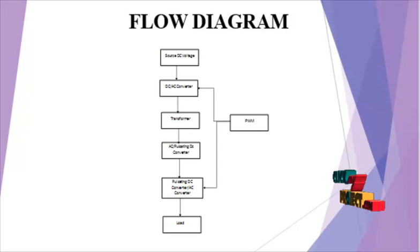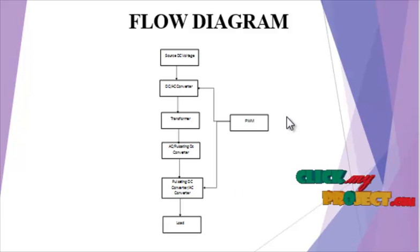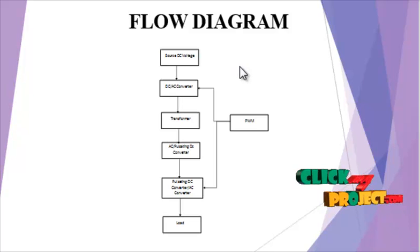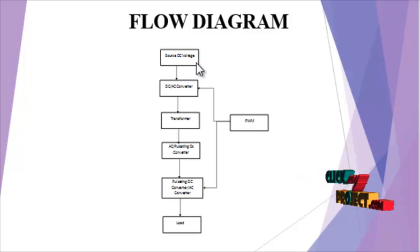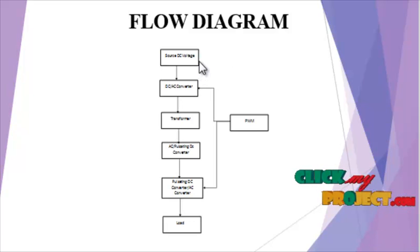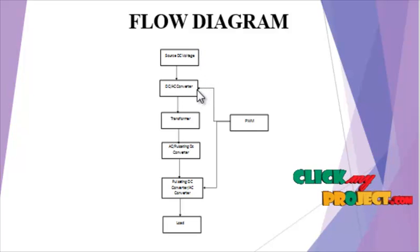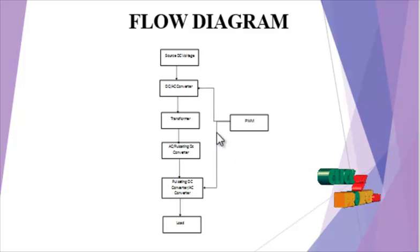Now we are going to discuss our product Flow Diagram. The input is a DC Voltage source. We are giving a DC input of 100 Volts, and this DC Voltage is converted to AC Voltage in the DC to AC Convertor section. We are using 9 switches for the high frequency stage.